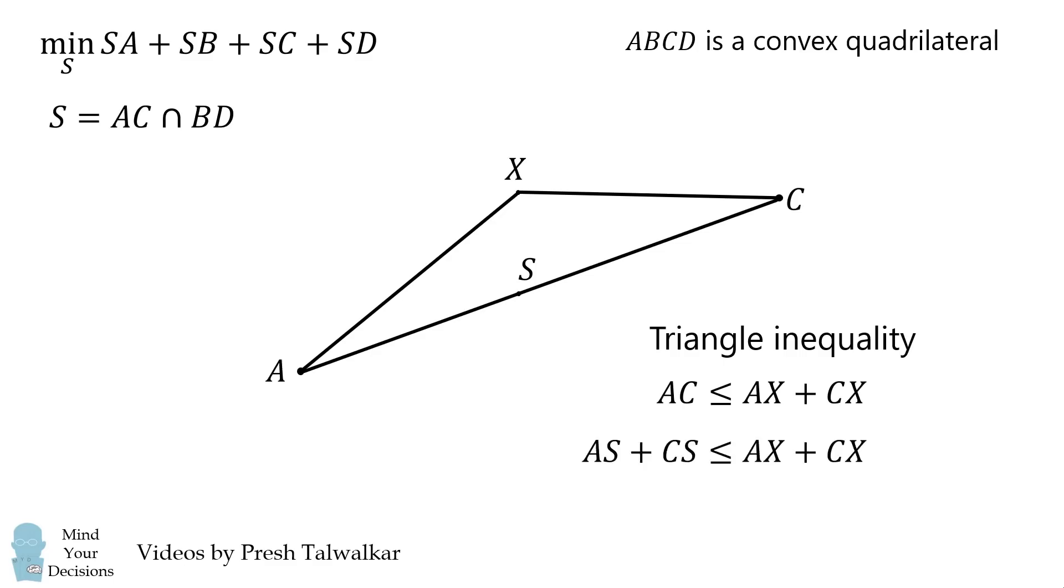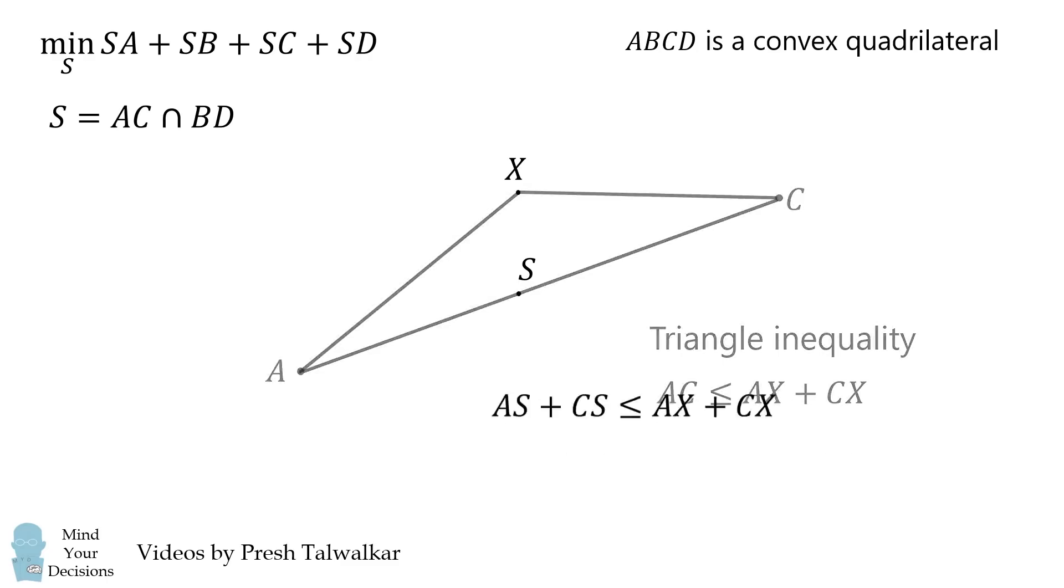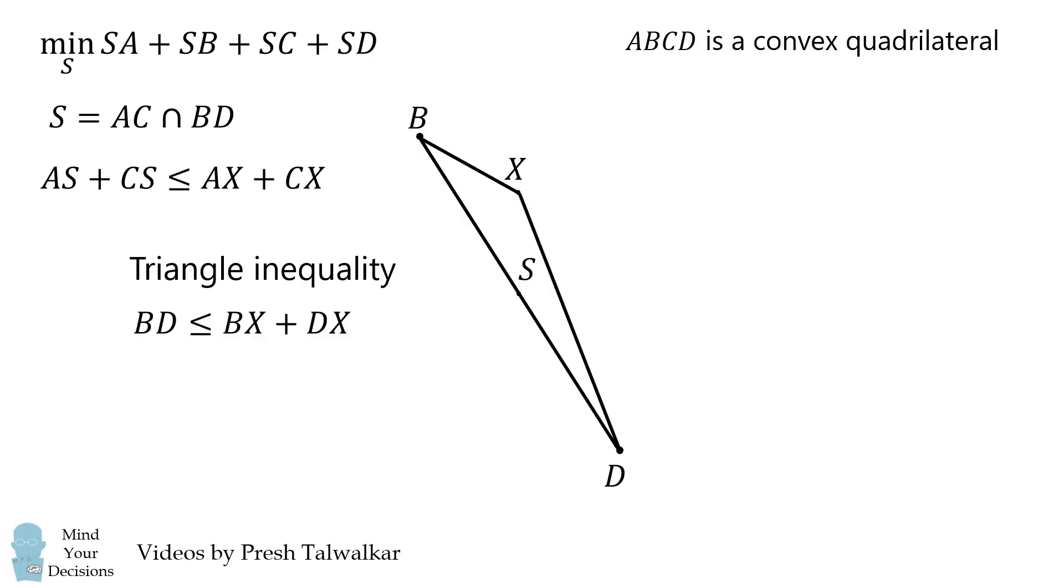Then AC is equal to AS plus CS. We will put this inequality to the side and for the same point X, we will consider the line segment BD. We will do a very similar sort of argument. By the triangle inequality, BD is less than or equal to BX plus DX. BD is equal to BS plus DS. We thus have another inequality.